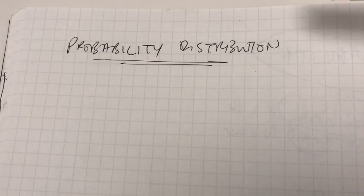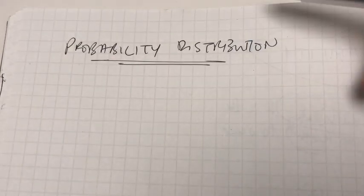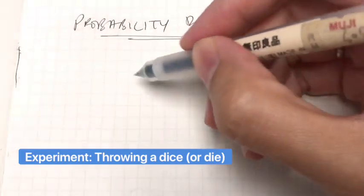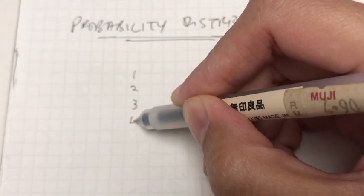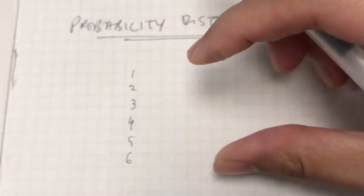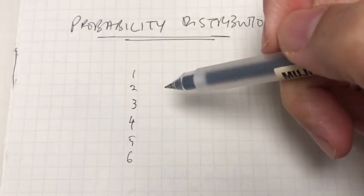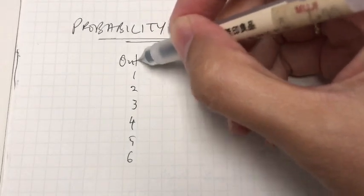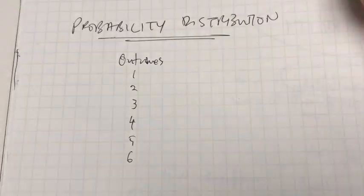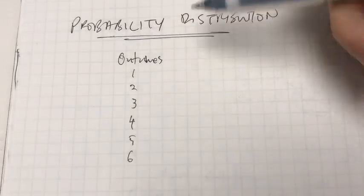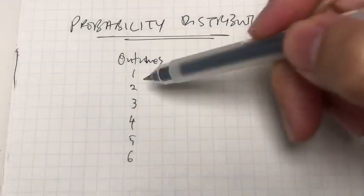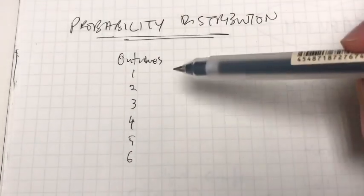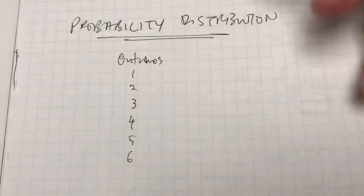Let's give an example of an experiment. Say we're interested in throwing a dice. A dice has six faces: one, two, three, four, five, and six. So what is the chance of us throwing a one? All of these are basically the outcomes of throwing the dice. Remember, throwing the dice is our experiment. These are the possible outcomes we can get whenever we decide to throw the dice.